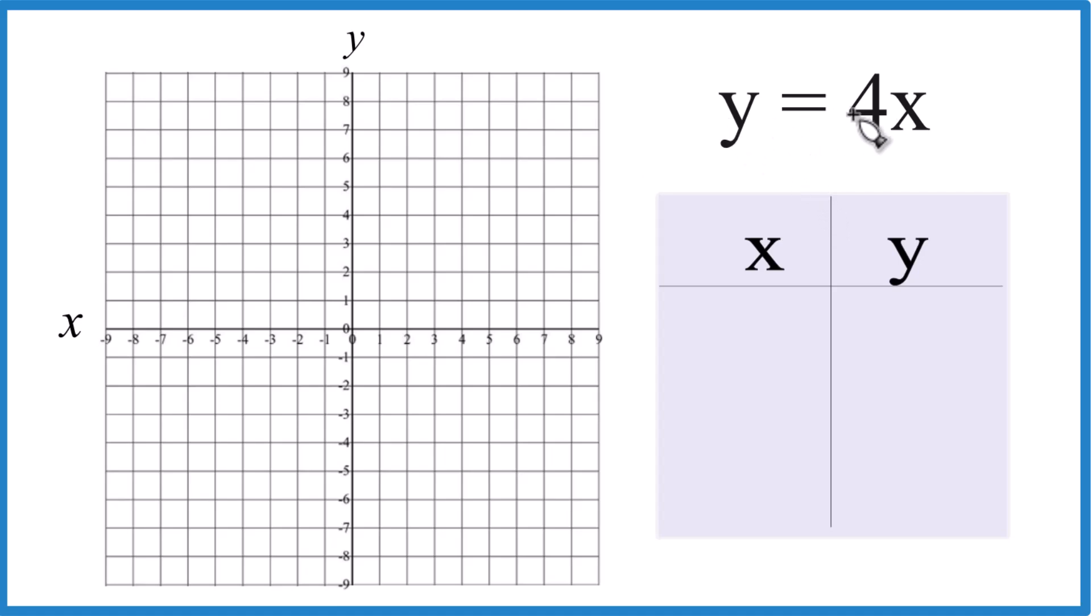So y equals 4x. I'm going to put values in for x. We'll multiply them by 4, figure out y, and then we'll have x and y. We'll graph it, and we'll have the graph for y equals 4x.